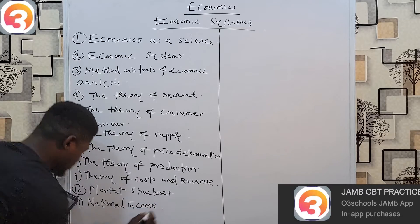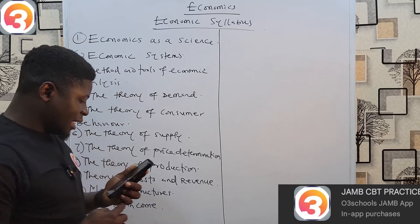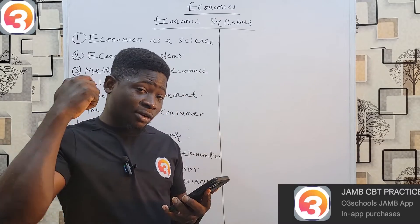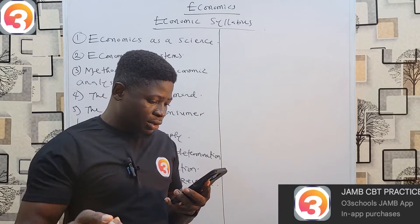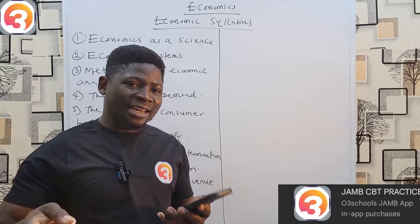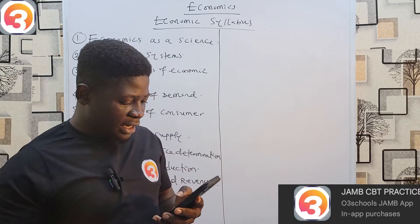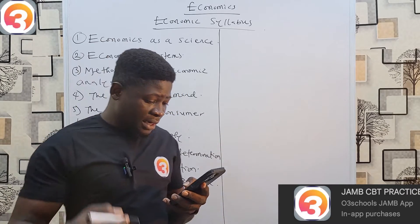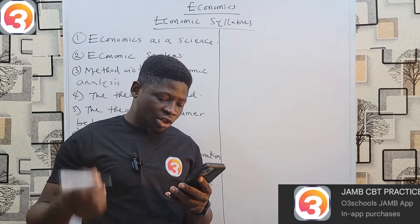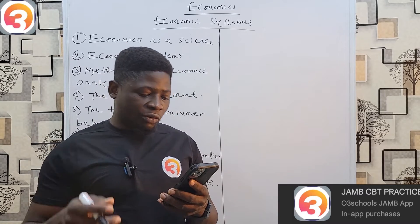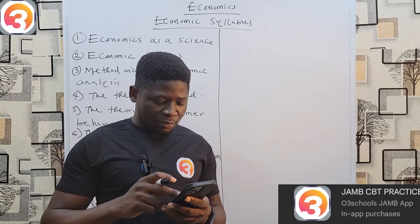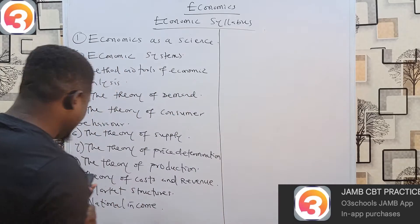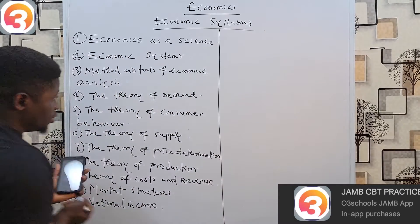Under National Income, look at the concepts of GNP, GDP, NNP, NDP, and so on and so forth. Look at national income measurement, the circular flow of income, elementary theory of income determination, and equilibrium national income. Number twelve is Money and Inflation.